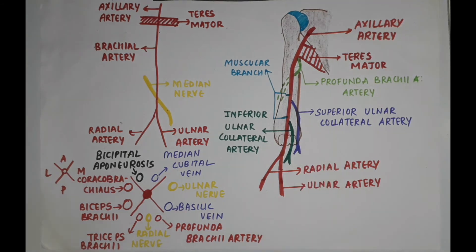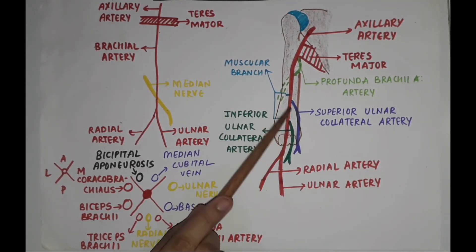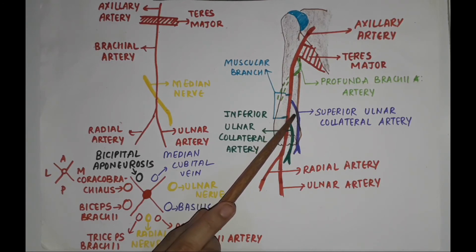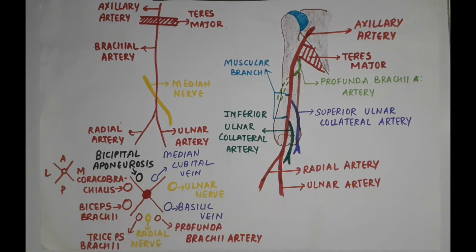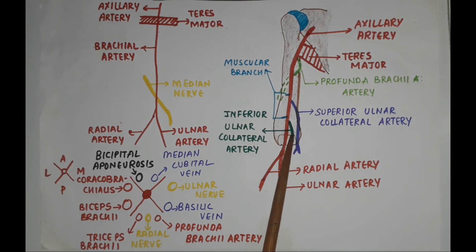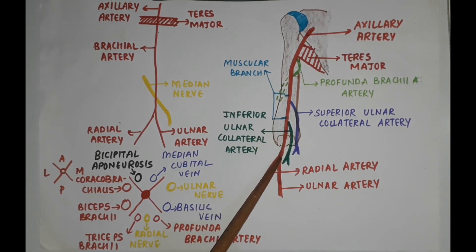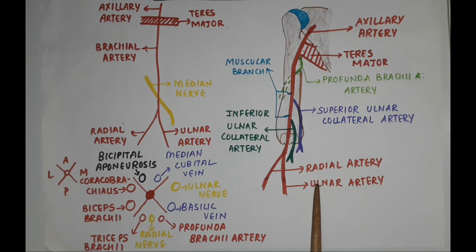The next branch is the superior ulnar collateral artery. This blue color artery represents the superior ulnar collateral artery; it arises in the upper part of the arm and accompanies the ulnar nerve, taking part in the anastomosis around the elbow joint. The next artery is the inferior ulnar collateral artery — this dark green color artery — also known as the supratrochlear branch, as it arises just above the trochlear part of the humerus. It arises in the lower part and takes part in the anastomosis around the elbow joint. The brachial artery ends in the cubital fossa by dividing into two terminal branches, namely the radial artery and the ulnar artery.